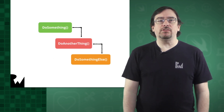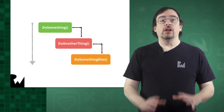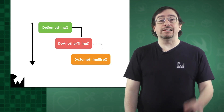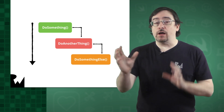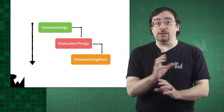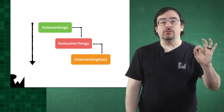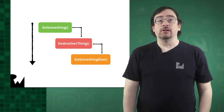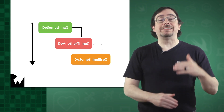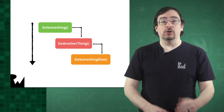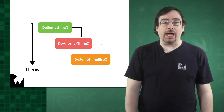In a nutshell, concurrency means doing multiple things at once. When we write our code, that code can be translated into a single path of execution. We may have lots of objects communicating with each other, but if you just follow that path of execution, you'll see that it follows a linear path. This is evident when you set a breakpoint in the debugger and step through each line of code. You can think of a path of execution as a thread.